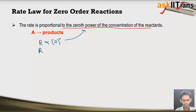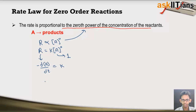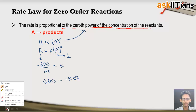We can eliminate the proportionality sign with a constant K, which is the rate constant for zero order reaction. The rate can be expressed in the form of change in concentration of reactant with time — with a minus sign because this is a reactant and the concentration of reactant decreases with passage of time — and this will be equal to K. Rearranging, dA is equal to minus K dT. This is the differential rate law for zero order reaction.